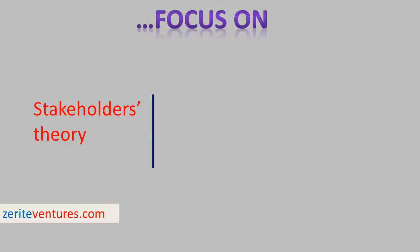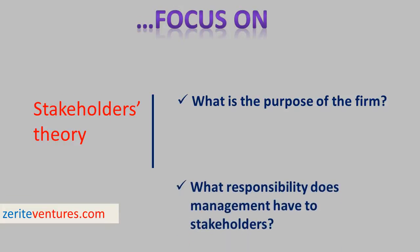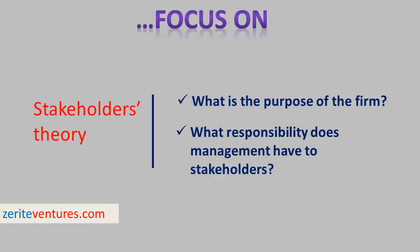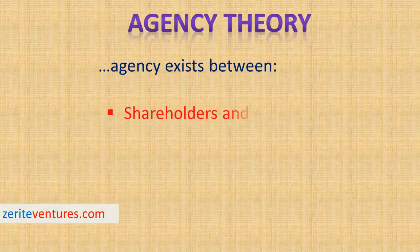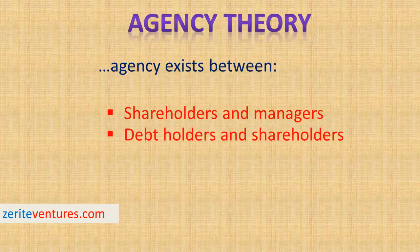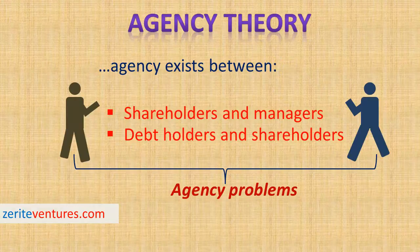The focus of stakeholder theory is articulated in two core questions, according to Freeman in 1994. Number one, what is the purpose of the firm? And second, what responsibilities does management have to stakeholders? There are challenges posed by this theory, and such details can be found in the notes. The last thing we need to look at is agency theory. Within the financial management context, agency exists between shareholders and management, and between debt holders and shareholders. The conflict of interest between these parties is referred to as agency problems.